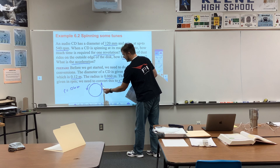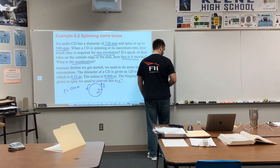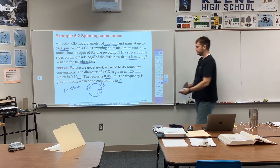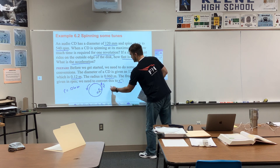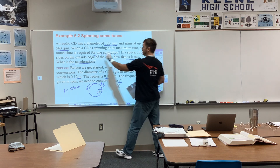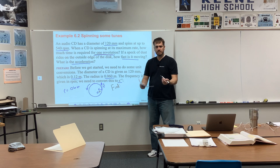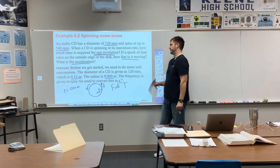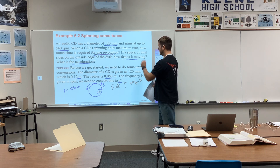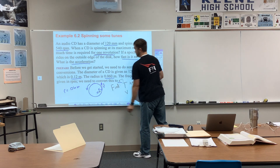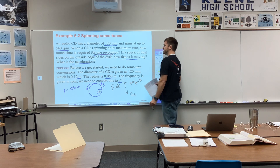Remember that at any given time the velocity is tangent to the circle, and the acceleration is the centripetal acceleration pointing towards the center. What are we asked to find? How much time is required for one revolution — that is T, the period. How fast is it moving — that's the magnitude of the velocity, always tangent to the circle. And what is the acceleration — the centripetal acceleration.